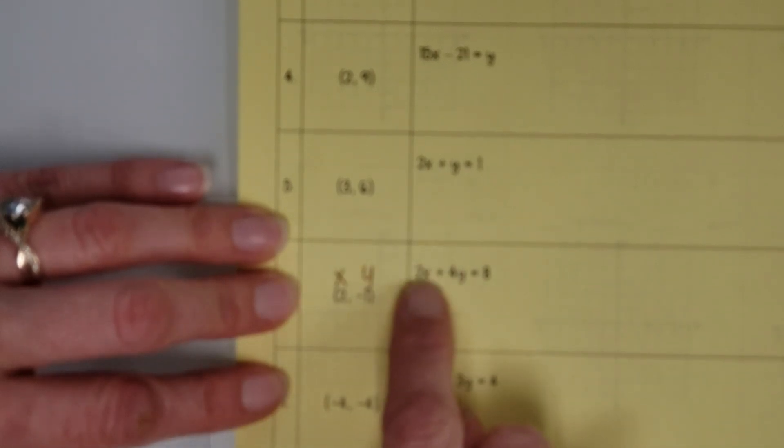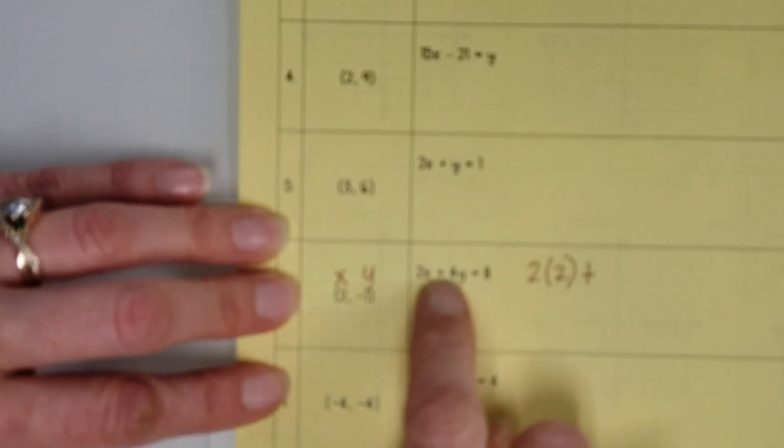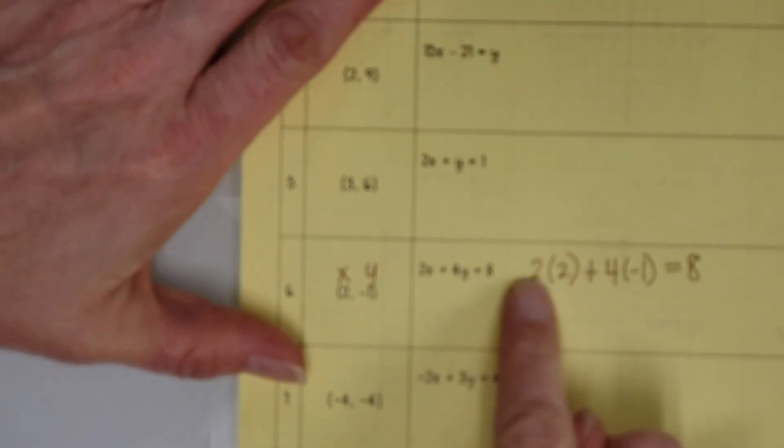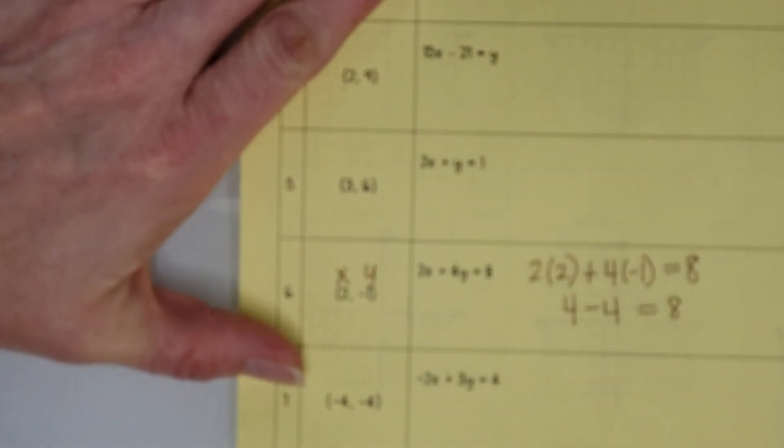Because that's my 2, plus, and then instead of 4 times y, I'm going to do 4 times negative 1. And then I want to know does that equal 8? So, 2 times 2 is 4, 4 times negative 1 is negative 4, and I still want to know does that equal 8? Well, 4 minus 4 is 0, and 0 does not equal 8.